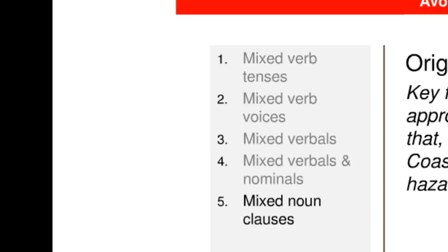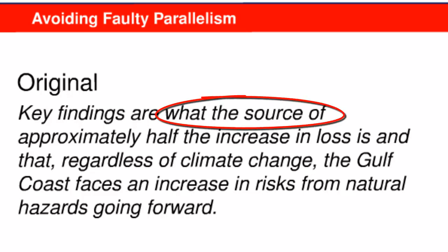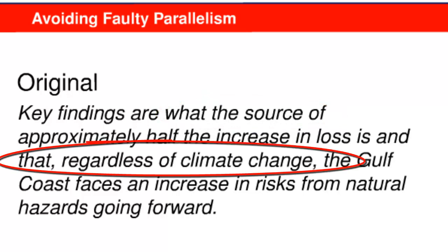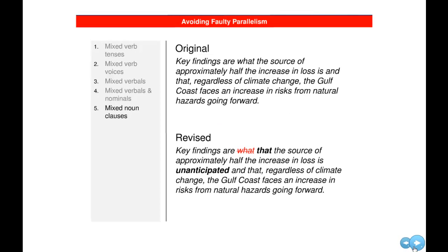The fifth cause of faulty parallelism is mixing types of noun clauses. There are two types: WH clauses and THAT clauses. In this example from the report, a WH clause beginning what the source is coordinated with a THAT clause beginning that regardless of climate change. The revised version achieves parallel structure by changing the WH clause into a THAT clause. Sometimes faulty parallelism is created when writers are uncomfortable repeating the same word or structure. While varying sentence structure might be effective in an essay, it's certainly not effective in the workplace. Professional writing requires repetition. The repeated use of THAT clauses in the revised sentence achieves more efficiency and requires less cognitive processing time.